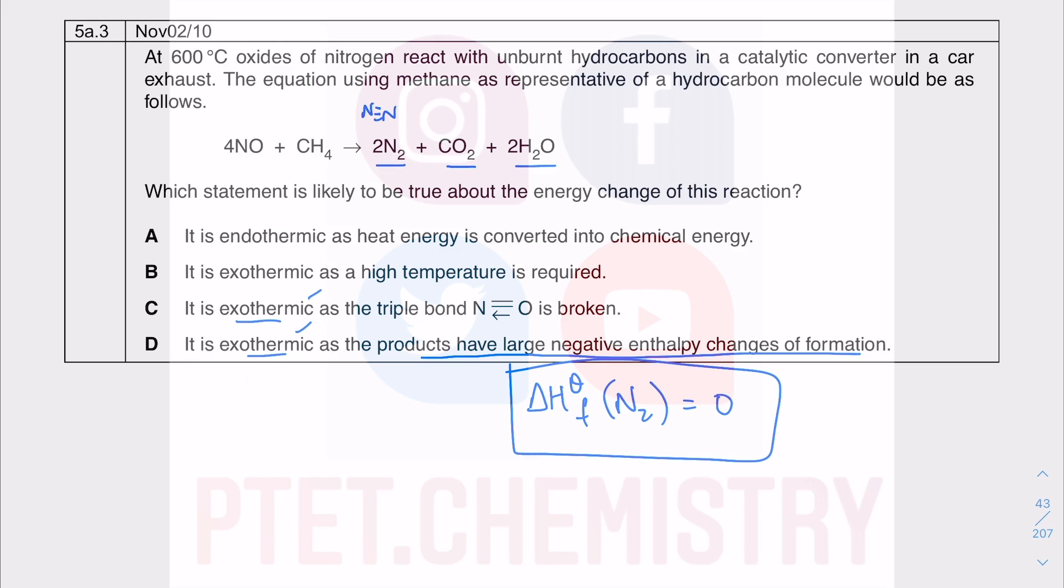But the overall reaction is it's bound to be exothermic as a result of you forming the really strong N triple bond. But it's got nothing to do with breaking this triple bond in NO. It's got more to do with the other substances that you're forming. You're also forming very strong C double bond O, as well as very strong OH bonds. So the answer, the best response there would have been D.